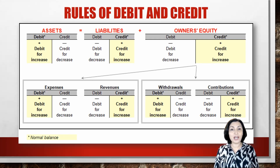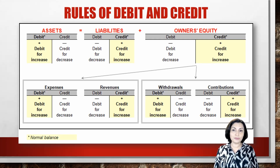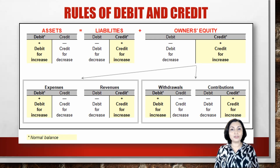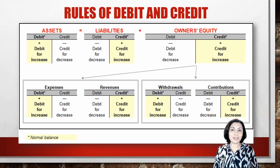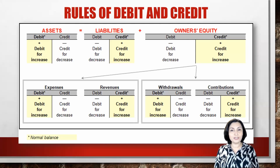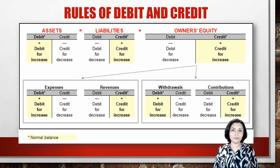Let's look at the rules of debit and credit a bit closer. Assets are increased by debit and decreased by credit, while liabilities and owner's equity are increased by credit and decreased by debit. But what about accounts such as revenue, expenses, owner's withdrawals, or contributions? All these accounts are a part of owner's equity. Expenses and withdrawals have the opposite rules, as they decrease owner's equity. We will look closer at those accounts later.